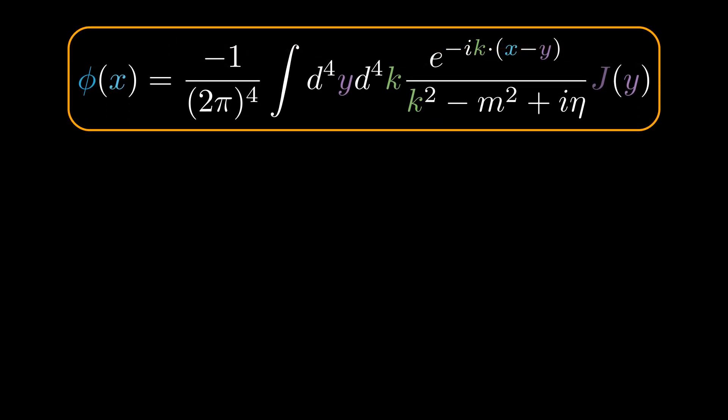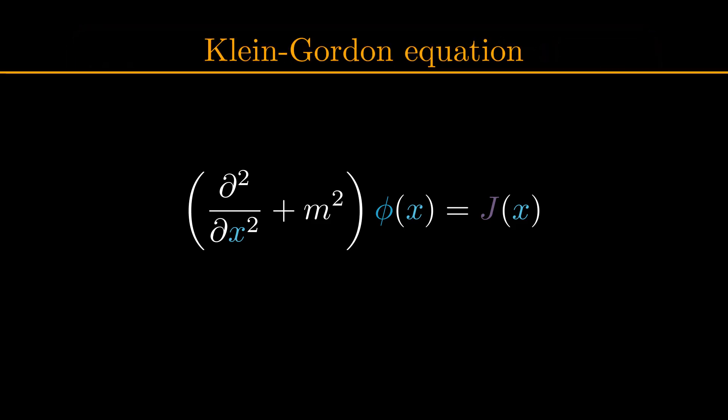Something very profound happens to our integral when we multiply the field function from the left with the second derivative with respect to x, and then add a term m squared. I worked out the derivation in section 1 of my document, and to make a short story even shorter, the integral on the right hand side simply solves to give the source function at location x. By acting on our field function with this operator, we obtain the Klein-Gordon equation for a scalar field phi. This is a very powerful result that enables us to find solutions for the field function for different sources j.